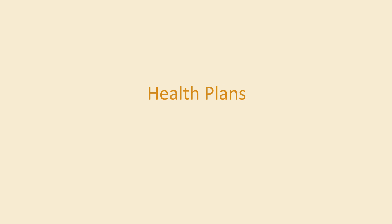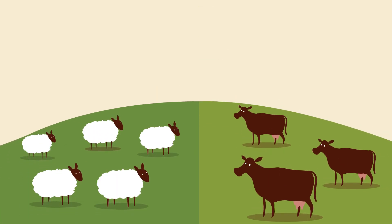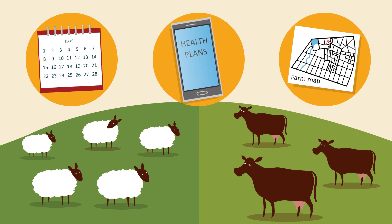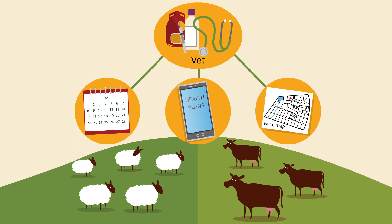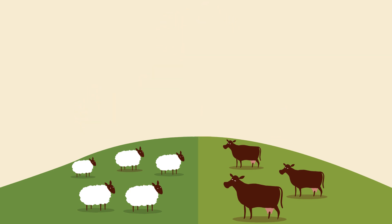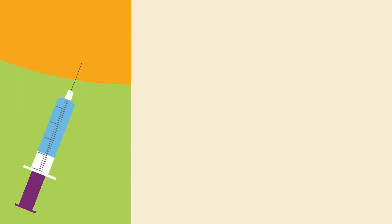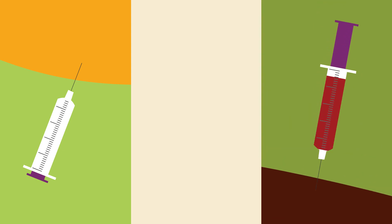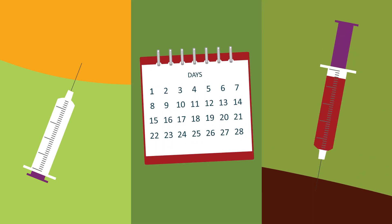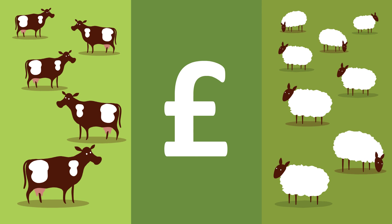You can help control the spread of disease by developing flock and herd health plans in consultation with your vet. This allows you to create a disease control strategy before busy times such as lambing or calving, which can save you many headaches. These plans ensure preventative vaccines and diagnostics are used at the correct time, as well as screening and regular monitoring. Healthier livestock will increase the production efficiency and profitability of your farm.